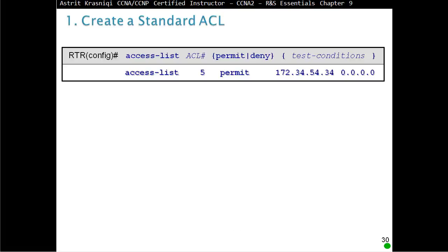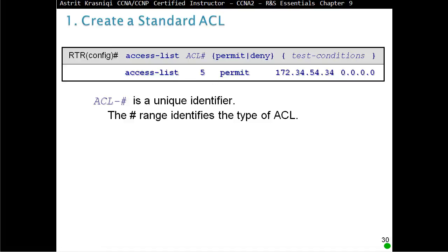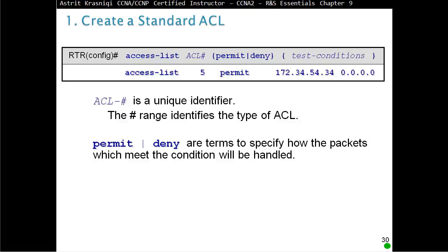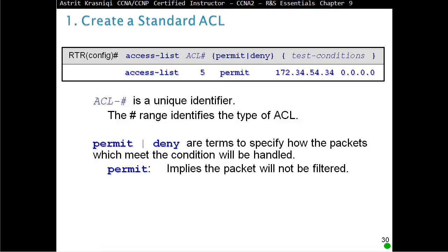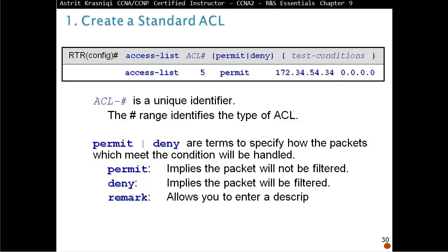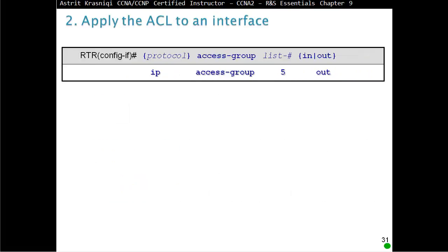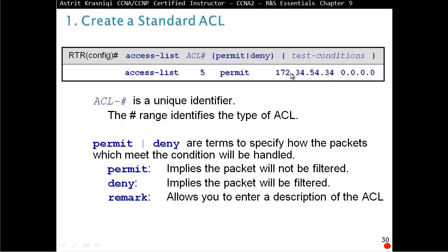After that, we have to apply it somewhere — go to the interface and apply it, then define the direction in or out. So for example, how we create an ACL: we start with 'access-list', then type a number. The number is a unique identifier — for example, 5 in this case. The range identifies the type of ACL. The next section is to define whether it is permit or deny, which specifies how a packet that meets the condition will be handled. Permit implies that the packet will not be filtered; deny implies the packet will be filtered.